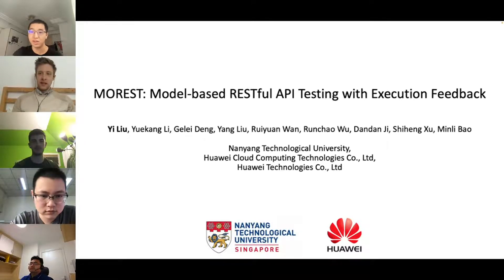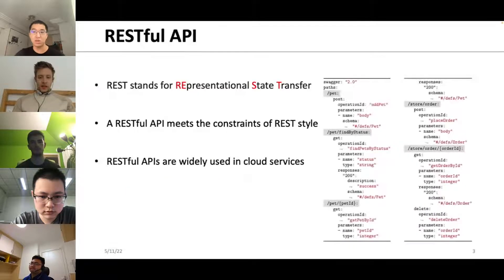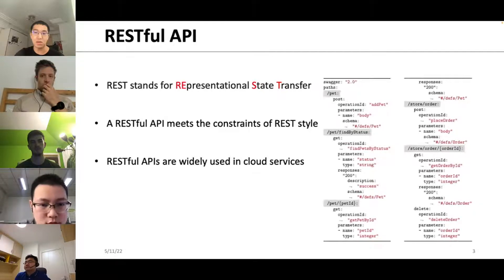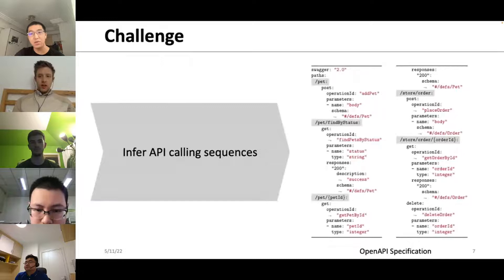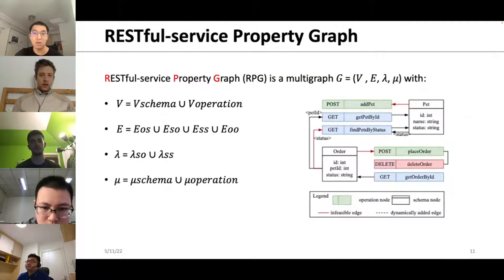Hello everyone, I'm Yiliu from Nanion Technology Co-University. I'll present our work on RESTful API testing, collaborated with industry partner Huawei. Cloud computing plays an important role in current platforms, so the robustness of cloud computing services is critical — bugs may lead to cyber attacks and financial losses. A RESTful API uses a constraint of REST style and is widely used in cloud services. One challenge in RESTful API testing is how to infer API calling sequences from OpenAPI specifications.